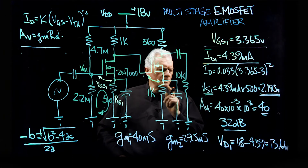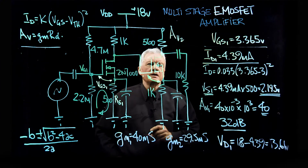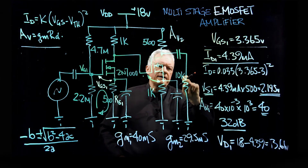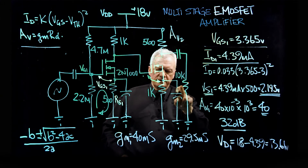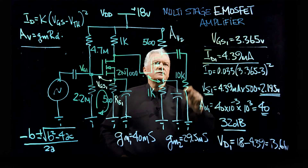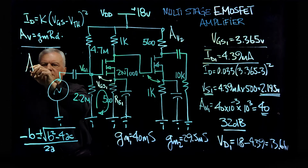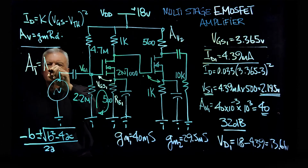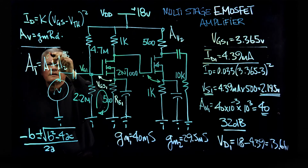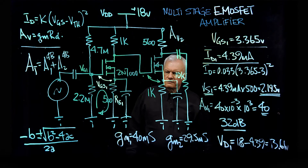The final part — and this is what I want to get across — is what is the voltage gain for the second stage? That is going to be the 560 ohm resistor in parallel with the 10K ohm resistor, times a GM of 29.5. Then you take it in dBs, and your total overall gain — A total — will be A1 plus A2 in dB. That gives you the total gain for this particular multi-stage amplifier.